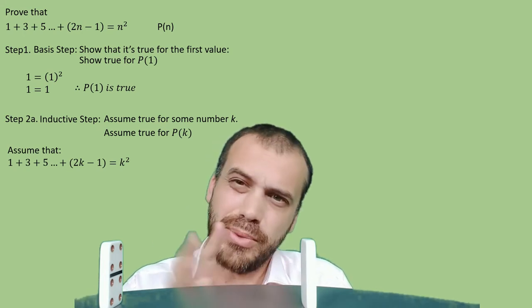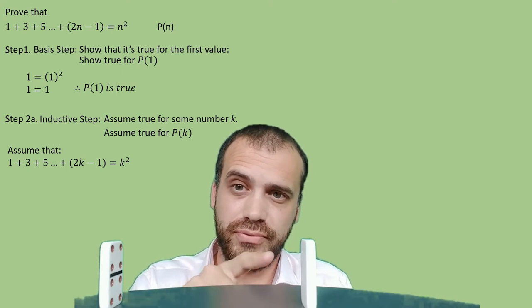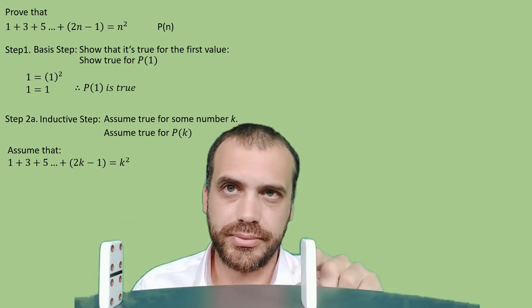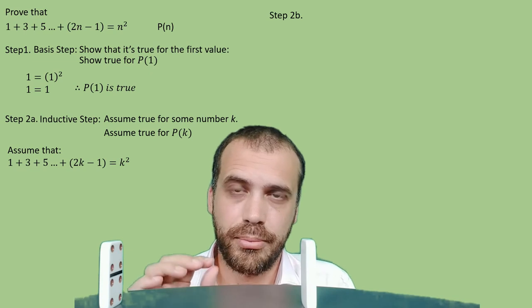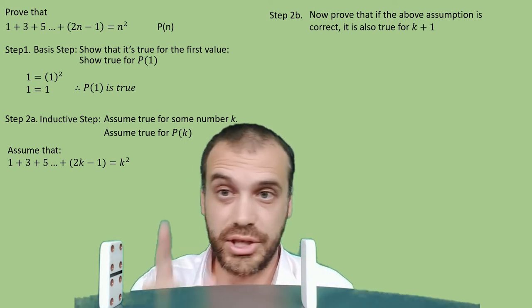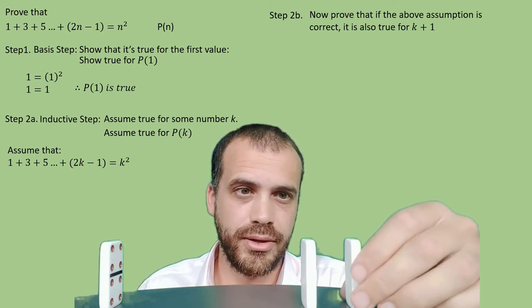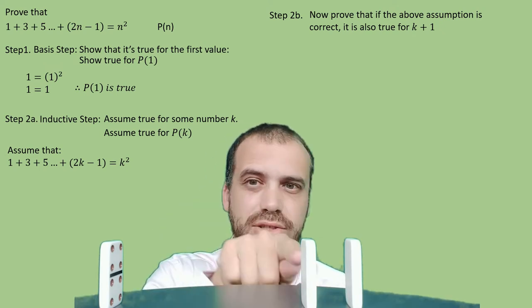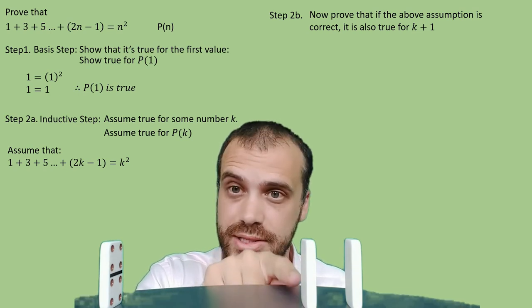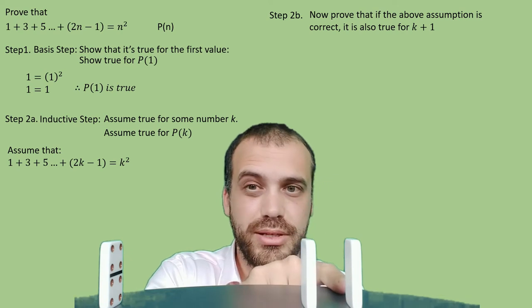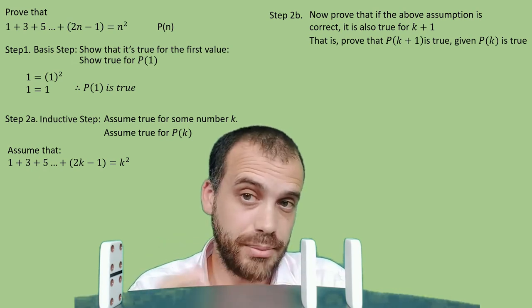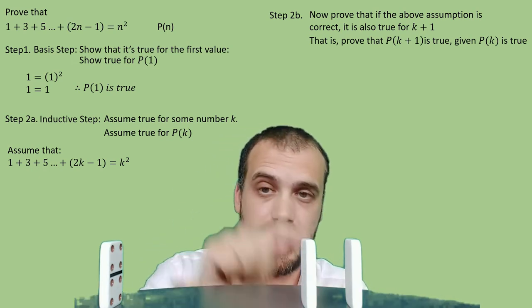It's a bit weird — we're just assuming that's true, and I found it really hard to wrap my head around this the first time. Step 2b: prove that if this is true, if it works for k, then it would also work for k plus 1. We're assuming it's true for k, and now we're going to prove that if it is true for k, then it must also be true for k plus 1. Mathematically: prove that P(k+1) is true, given that P(k) is true.